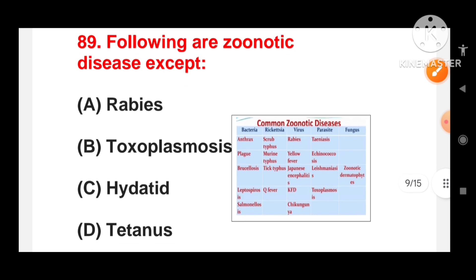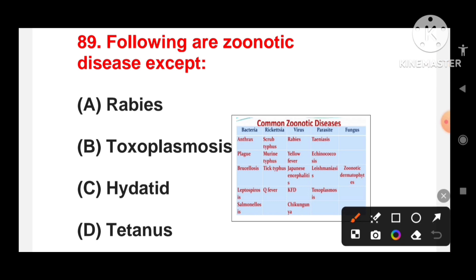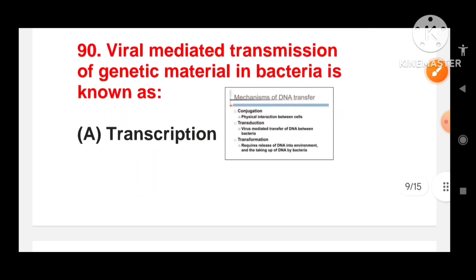Following are zoonotic diseases except: rabies, toxoplasmosis, hydatid or tetanus? Tetanus is not a zoonotic disease. It is caused by the bacterium Clostridium tetani and is typically contracted through wounds contaminated with soil or animal feces, not through direct transmission from animals. But rabies, toxoplasmosis and hydatid disease are zoonotic and can be transmitted from animals to humans. Hydatid disease is caused by the tapeworm of the genus Echinococcus and the definitive hosts are usually canines such as dogs and wolves. Humans become infected through contact with these animals. So the exception is tetanus.